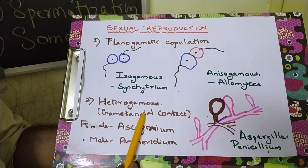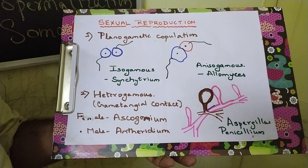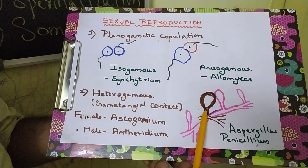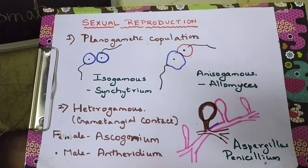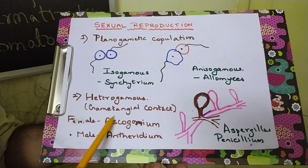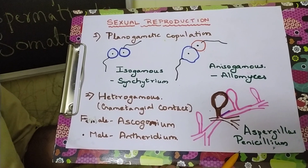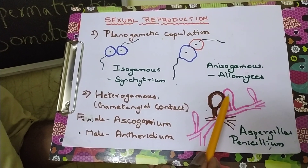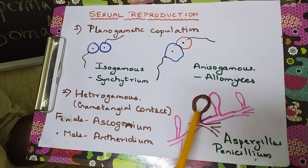The second type is gametangial contact, which uses the term heterogamous, meaning the sex organs are different. The female sex organ is globose and is called ascogonium in ascomycetes or oogonium in oomycetes. The example taken here is Aspergillus and Penicillium. The ascogonium is the female sex organ and the anteridium is the male sex organ.